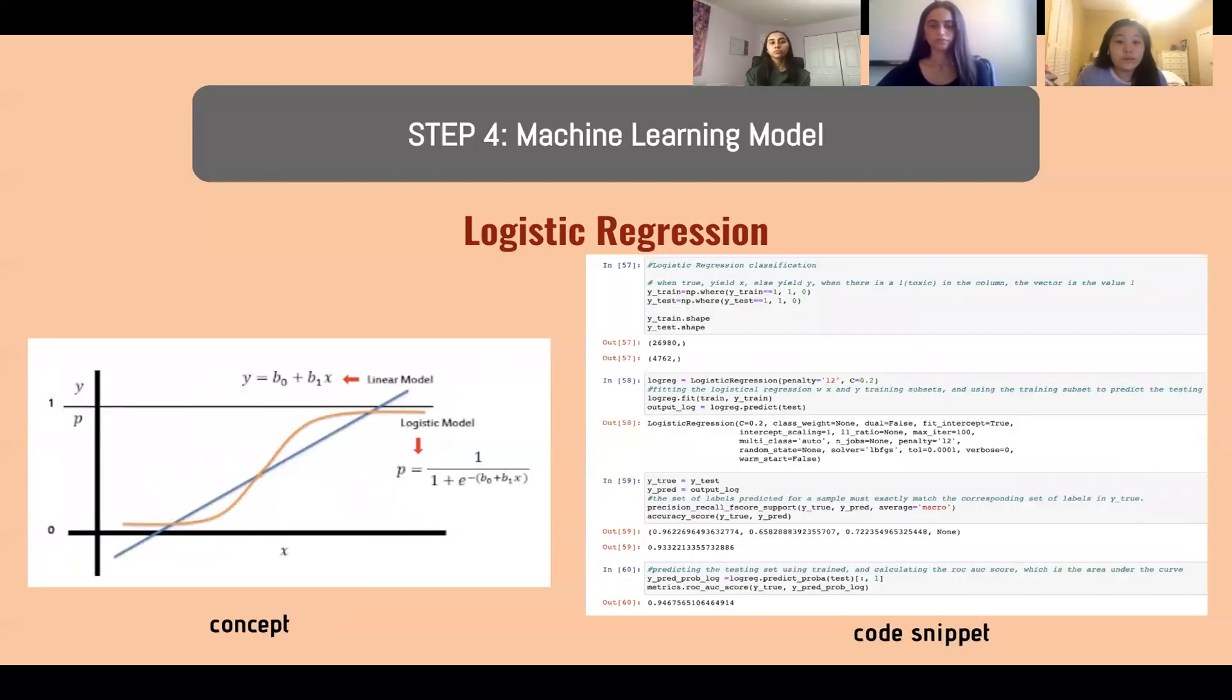And the other algorithm that we used was logistic regression, which is a common machine learning algorithm that is used for classification problems, like with classifying toxic comments. So basically, logistic regression separates the data sets based on either zero or one, which represents if the comment is toxic or non-toxic. So using the vectors from vectorization, we plotted that onto a graph, and then using one of the methods from the Python library, we were able to create a logistic model that separated the toxic comments from the non-toxic comments.